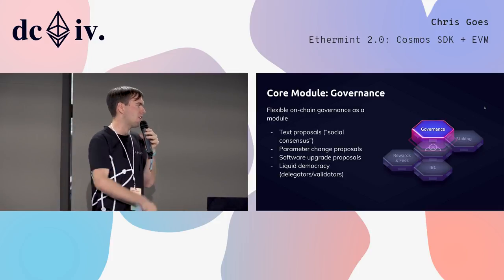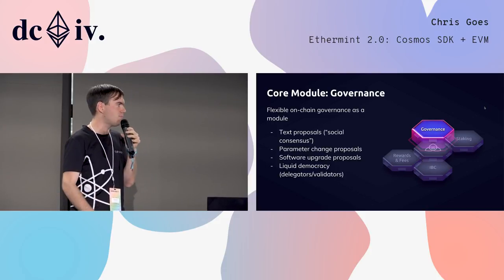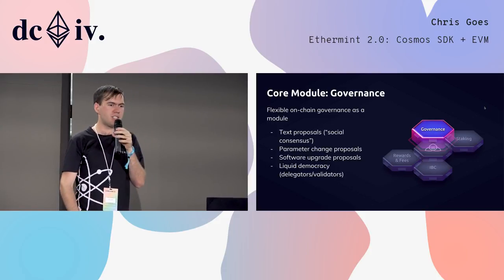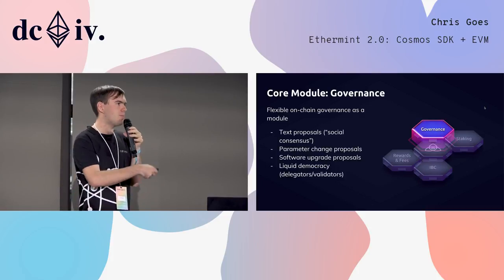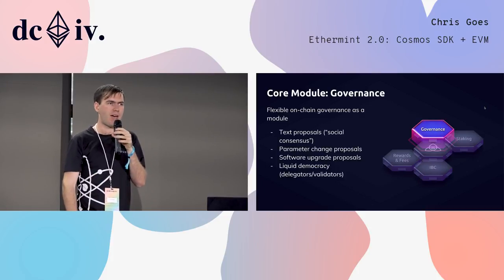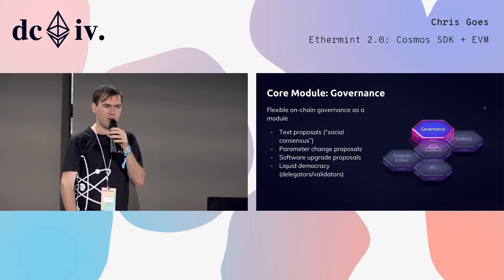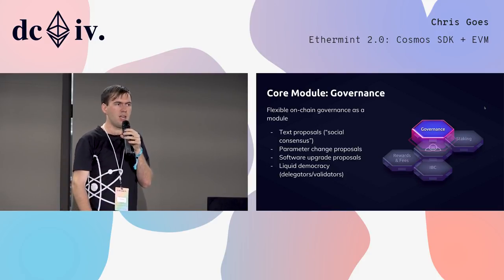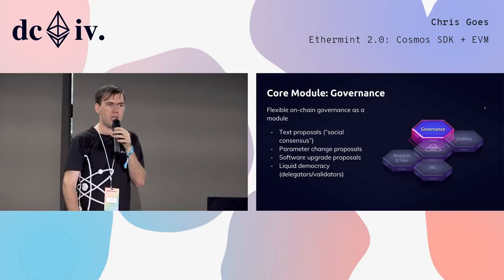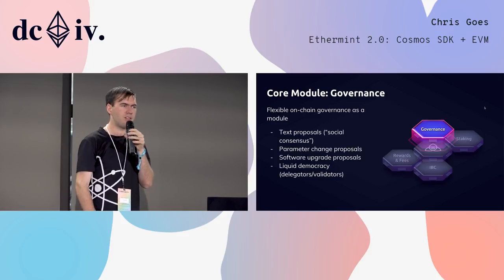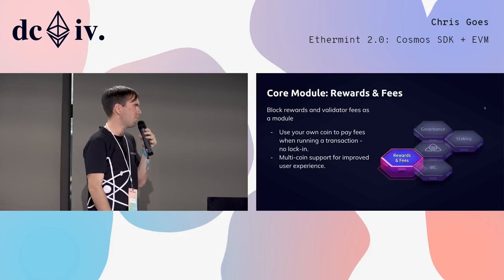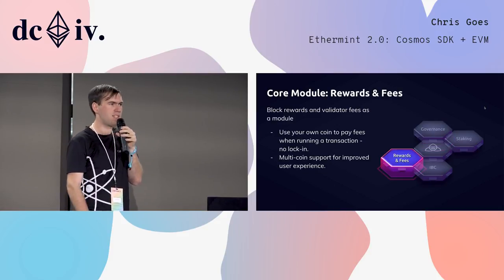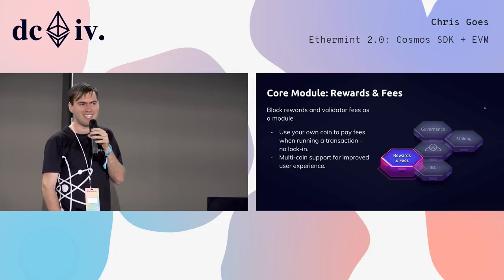Once everyone has come to consensus on that proposal, at a particular block height, automatically. For governance, we've elected to use liquid democracy. In Tendermint blockchains there will be a few hundred validators. Those validators can vote, and by default they will carry their delegators' votes with them. If your validator votes in favor of a proposal and you as a delegator elect to do nothing, your stake will count in favor of the proposal. But delegators can also override the vote of their validators if they disagree, and they will have time to do that if they see what their validator votes for and decide they don't like it.